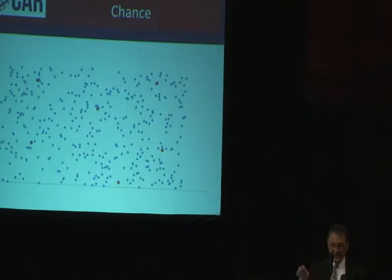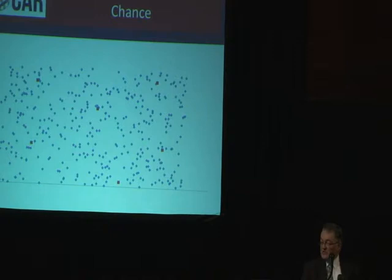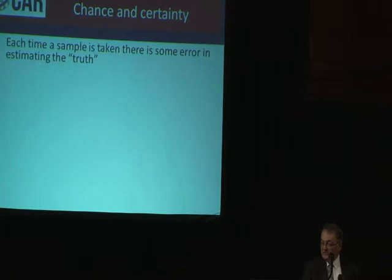The point of this is that whenever you take a sample from a large population you may get the wrong answer. But it will be closer to the right answer the bigger the sample size is. So chance has a role and certainty has a role in deciding what answer you actually get when you do a study.